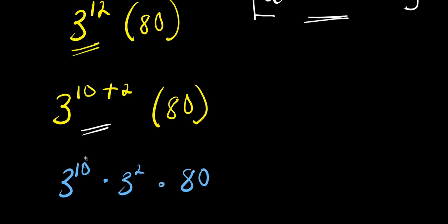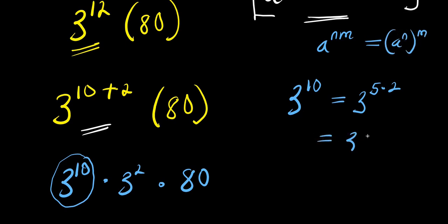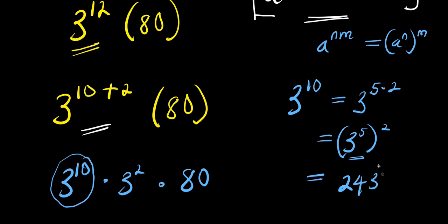Now let's find the value of three to the power ten. Three to the power ten equals three to the power five times two. And if you have a to the power n times n, this equals a to the power n to the power of n. So this gives us three to the power five, squared. Three to the power five is two hundred and forty-three, raised to the power of two.